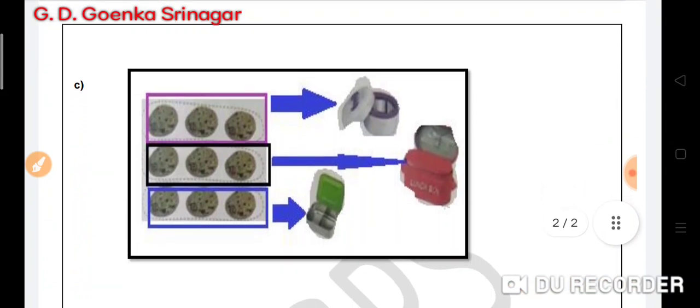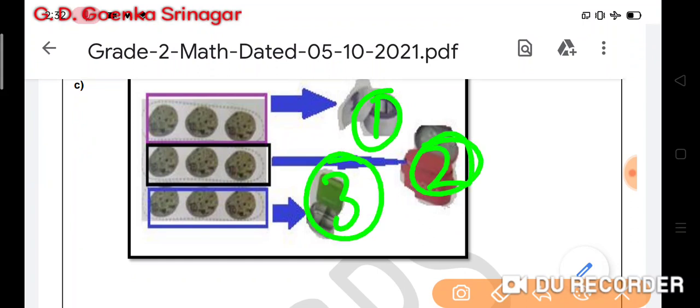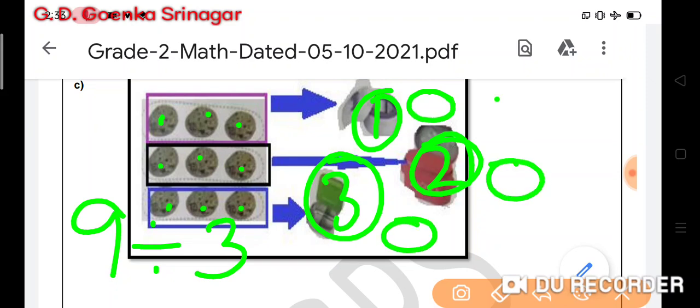Now let us see part C. Here we have to distribute the chapatis and keep them in 1, 2, and 3 lunch boxes. What is the total number of chapatis here? 1, 2, 3, 4, 5, 6, 7, 8, and 9. So 9 chapatis to be equally distributed among 3 lunch boxes. I will start: 1 chapati, 1 chapati, and 1 chapati.